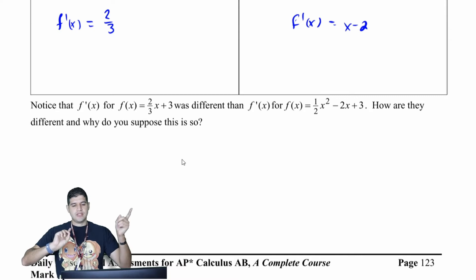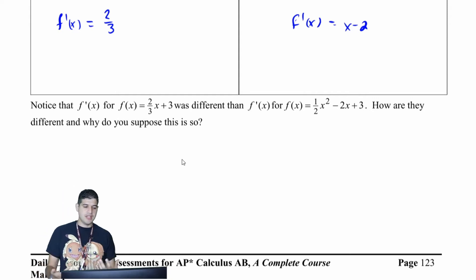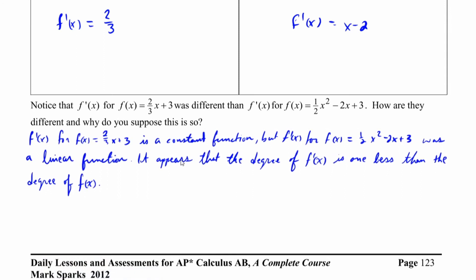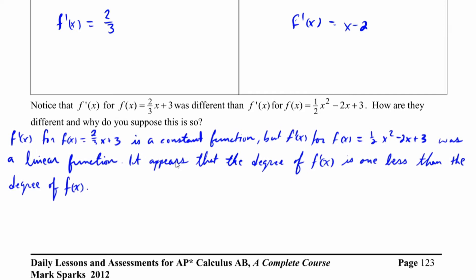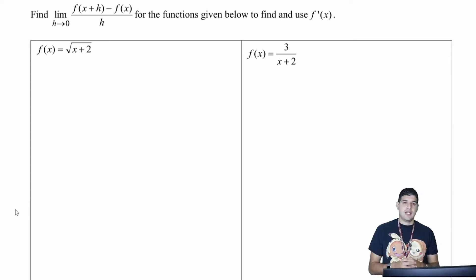Now I want you to look at these two derivatives. f prime of x is two-thirds, and f prime of x is x minus two. Think about how they differ from the original functions. For f of x equal to two-thirds x plus three, f prime is a constant. For f of x equal to one-half x squared minus two x plus three, f prime is linear. It appears the degree of f prime of x is one less than the degree of f of x. Now I have two more derivatives and two tangent lines to find, and after those we'll check answers using a graphing calculator.